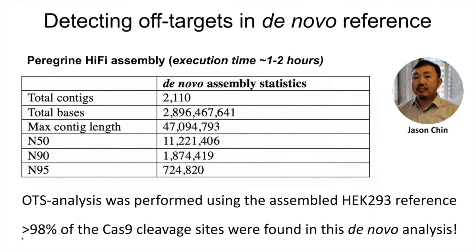We also performed a de novo assembly of this HiFi data, with help from Jason Chin. In this case, the execution time was only one to two hours instead of several weeks as before, because these HiFi reads are quite easy to assemble. We got very good assembly statistics. We then used this de novo assembled reference instead of the existing human reference and did the same analysis using the Smart OTS reads. We found that 98% of the Cas9 cleavage sites we could recover from the de novo assembly — basically finding more or less all on- and off-target sites by doing this analysis, without having an existing reference from before.